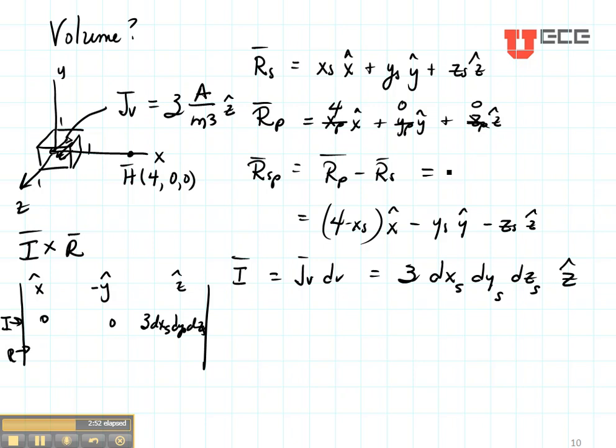The R vector, that's right here, is going to be 4 minus XS, minus YS, and minus ZS. Now let's do our cross product. Take out the column and the row that X is in and cross multiply, right here is 0,